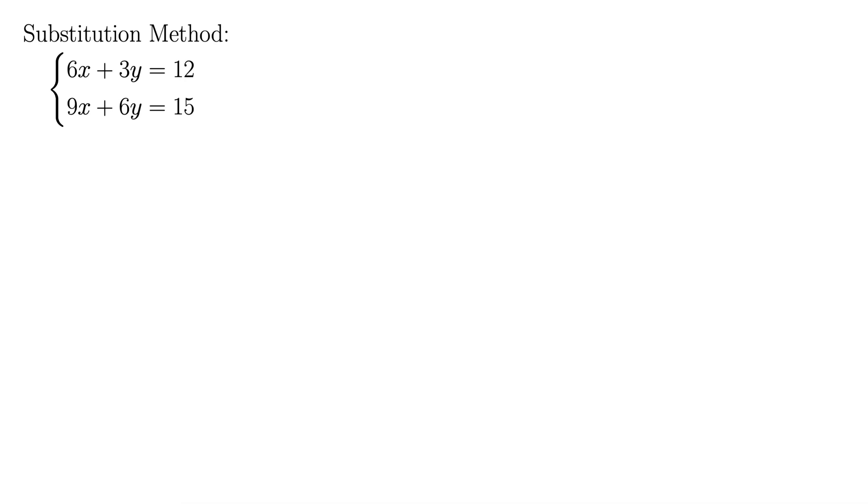Here's one for you to try. We're using the substitution method here to solve the linear system 6x plus 3y equals 12, 9x plus 6y equals 15. Let me just give you a hint in starting this. For the substitution method to work, you need to isolate a variable.